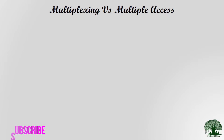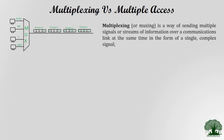Before getting into FDMA, we will try to understand how multiplexing and multiple access are related. Multiplexing is a way of sending multiple signals or streams of information over a communication link. The information generated by different users is combined and sent over a common communication link — this process is what we call multiplexing.